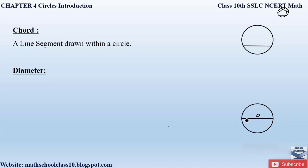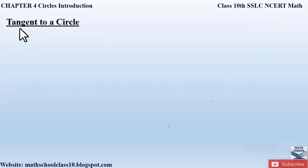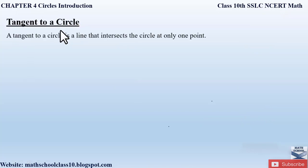Now let us see what the diameter of a circle is. The diameter is a line segment which passes through the center of the circle, denoted by D. Diameter equals two times the radius, because from center O to one side we have a radius, and the other side also forms a radius. A diameter is also called a chord — it is the maximum length a chord can have in a circle.